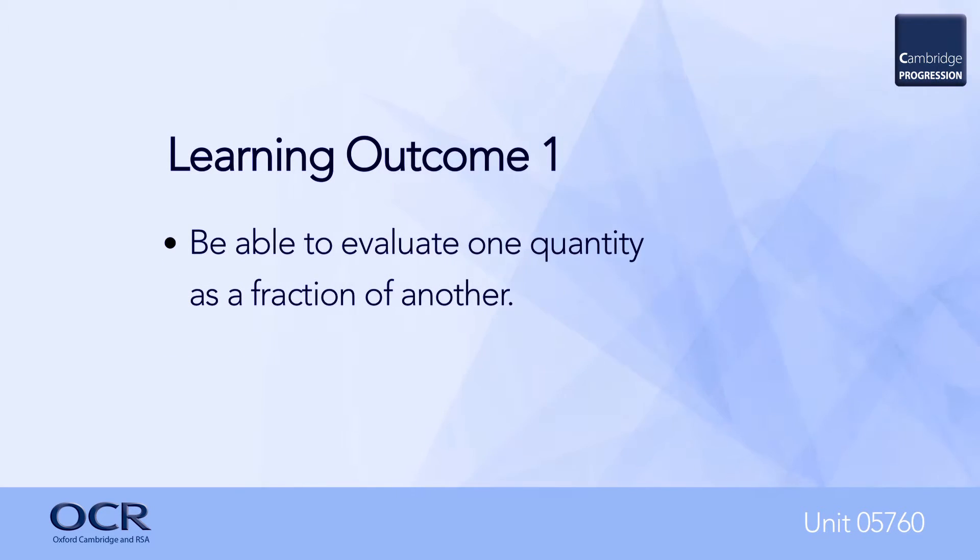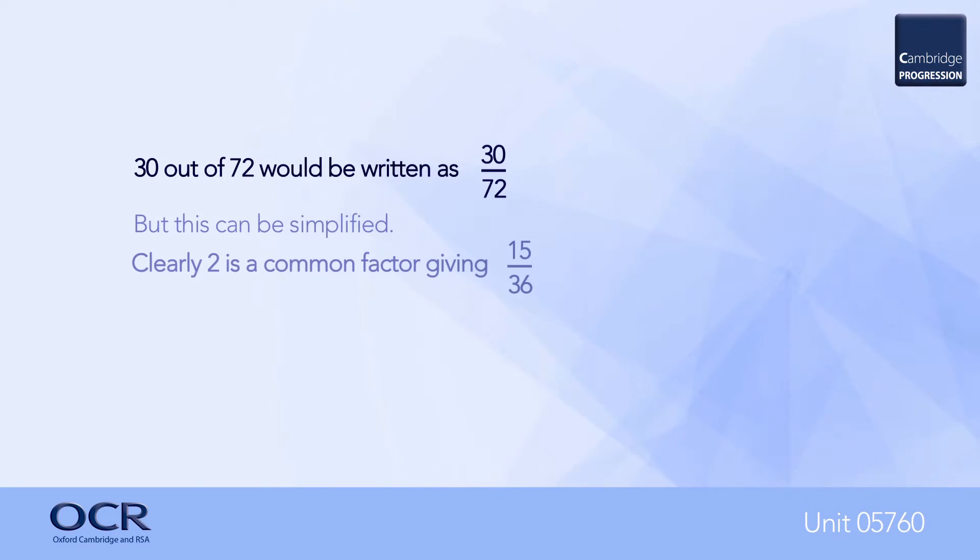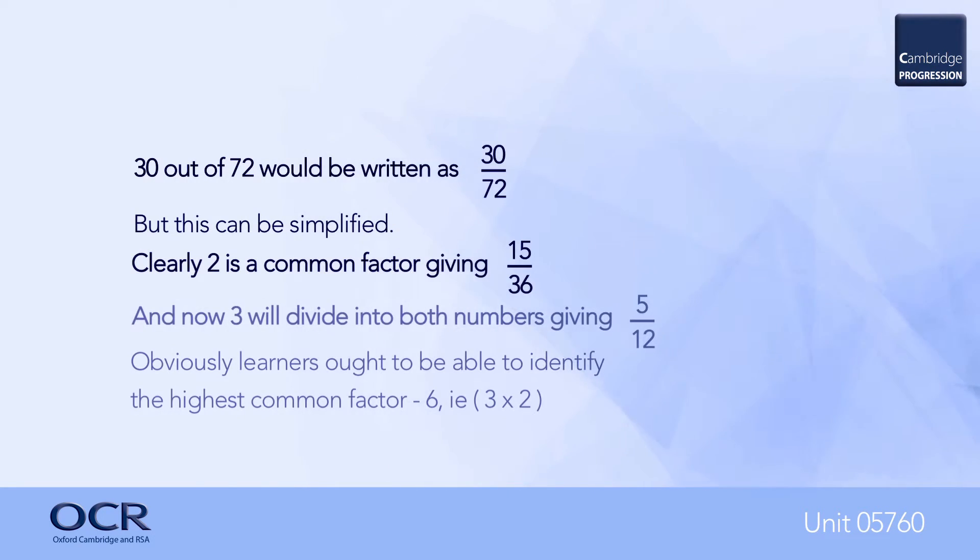For learning outcome number one, learners must be able to evaluate one quantity as a fraction of another. Firstly, learners must be able to express one number as a fraction of another, simplifying where possible, so recognition of common factors will clearly be required. An example is shown on the slide.